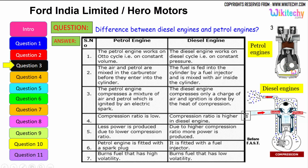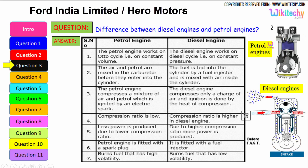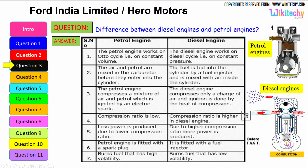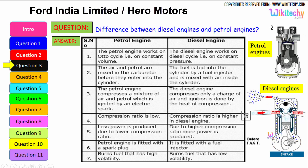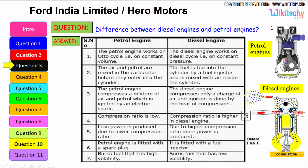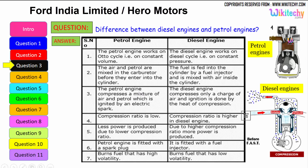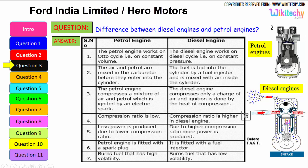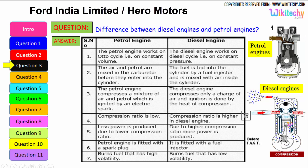The air and petrol are mixed in the carburetor before they enter the cylinder. In a diesel engine, fuel is fed into the cylinder by a fuel injector and is mixed with air inside the cylinder. The petrol engine compresses a mixture of air and petrol which is ignited by an electrical spark, whereas the diesel engine compresses only a charge of air and ignition is done by the heat of compression.